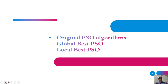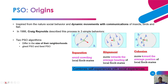Now let us see the original PSO algorithm — global best PSO and local best PSO. PSO is inspired from the social behavior and dynamic movement with communication of insects, birds, and fish. In 1986, Reynolds came up with three simple behavior processes.